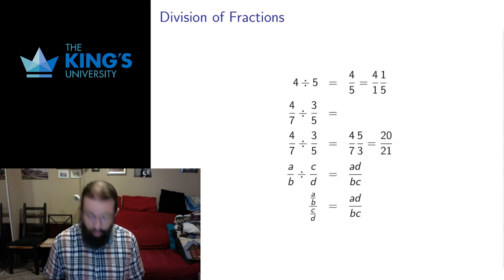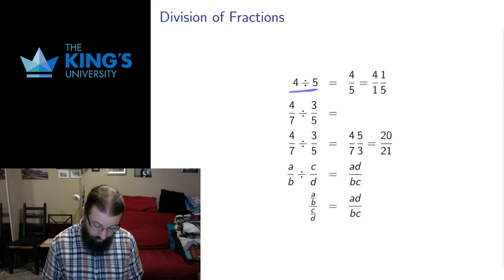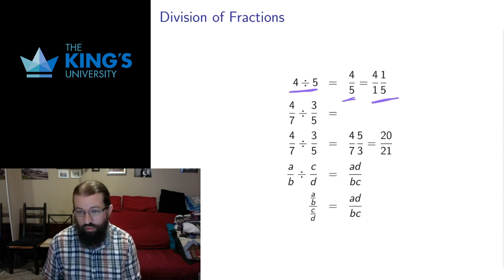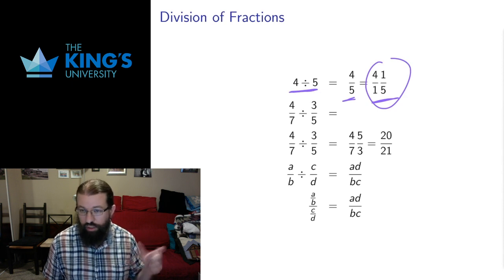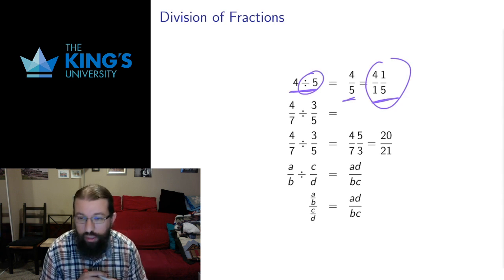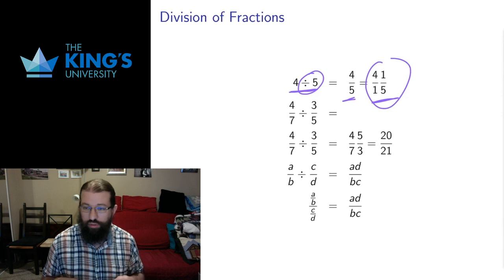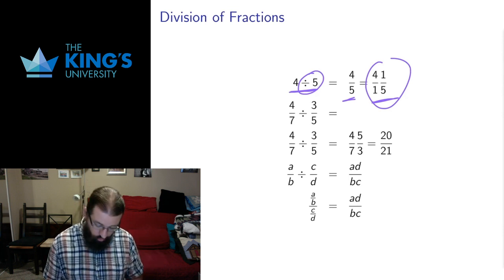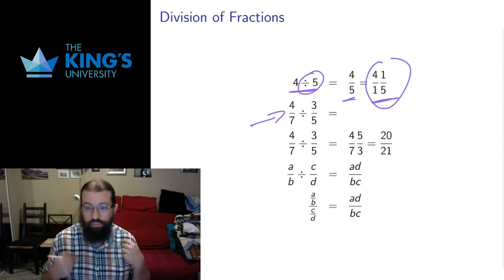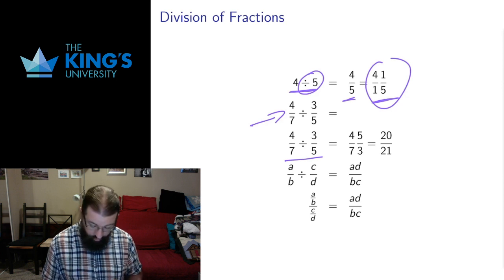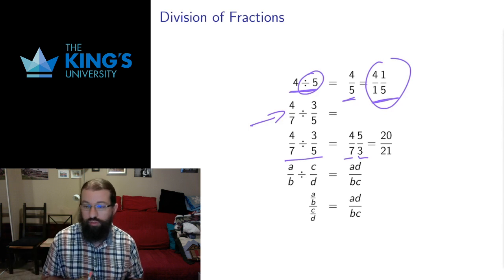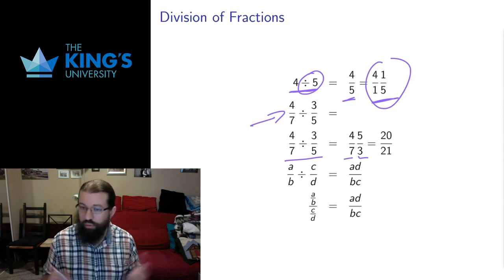For division, it's almost as simple. To motivate this: four divided by five is the same as the fraction four-fifths, which equals four over one times one-fifth. Using multiplication of fractions, multiplying numerators and denominators gives four-fifths. So what's happening is I'm multiplying four by the reciprocal of the thing I'm dividing by. That makes sense because reciprocals put things in denominators, and denominators are just division. So division of fractions is just multiplication by reciprocals.